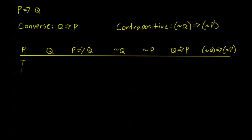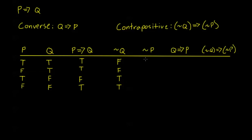Filling this in, I need to get my basic truth values for my two simple propositions. P implies Q is true whenever P is false or Q is true, so I get true, true, false, true — this is the only case where it's false. Not Q is true when Q is false and false when Q is true: false, false, true, true. Not P is the opposite of P: false, true, false, true.